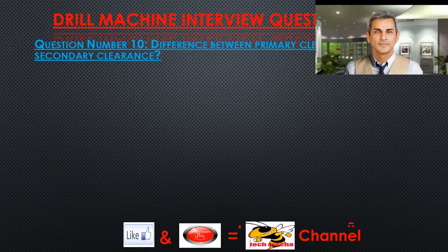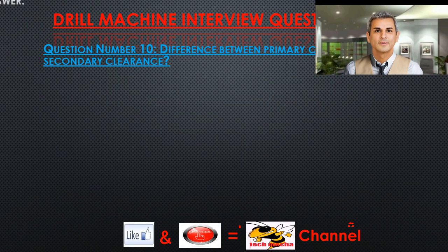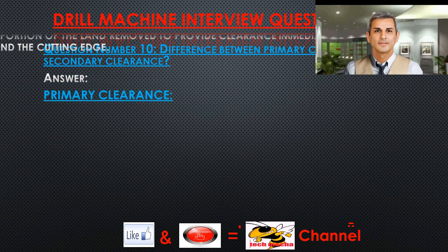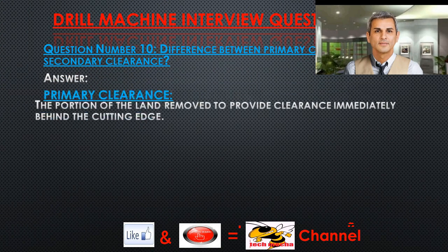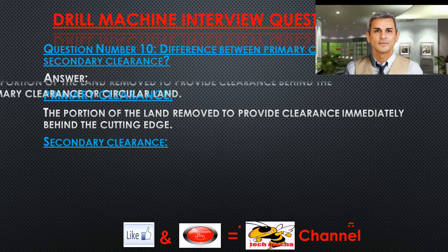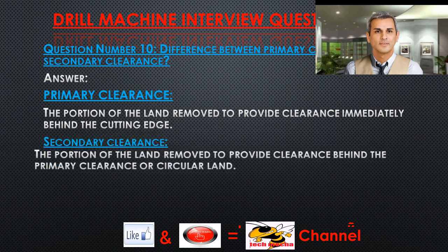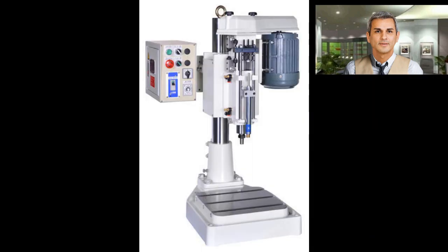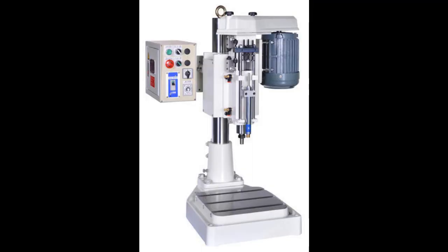Question number ten: What is the difference between primary clearance and secondary clearance? Answer. Primary clearance: The portion of the land removed to provide clearance immediately behind the cutting edge. Secondary clearance: The portion of the land removed to provide clearance behind the primary clearance or circular land.